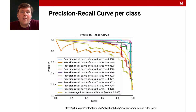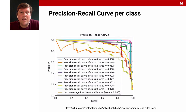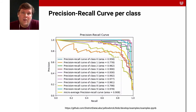Another thing worth considering is the precision-recall curve per class. This is especially important for multi-class classification because it gives you a feeling of which classes have problems where — where is precision a problem, where is recall a problem, where do we have issues with coverage, and where do we have issues with how many of our predictions are correct?